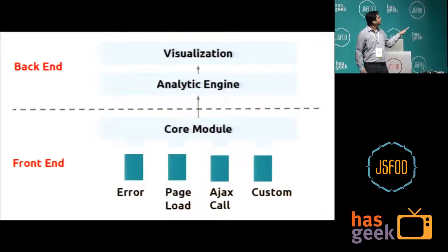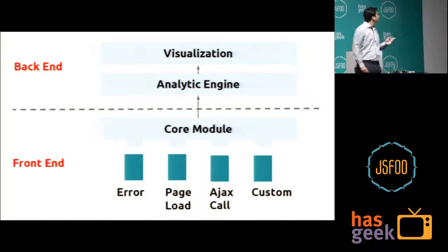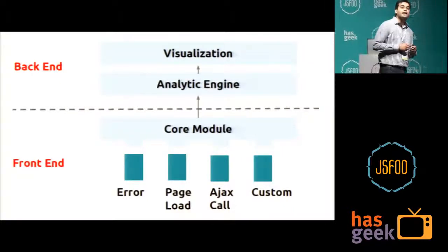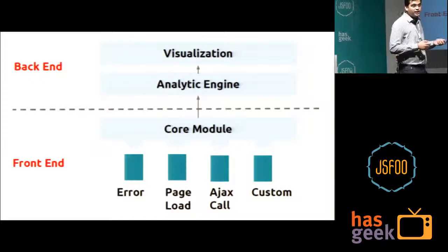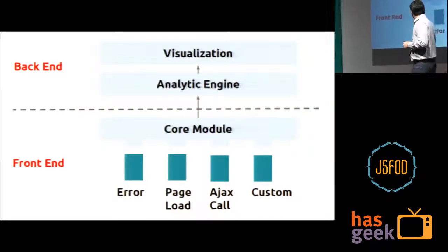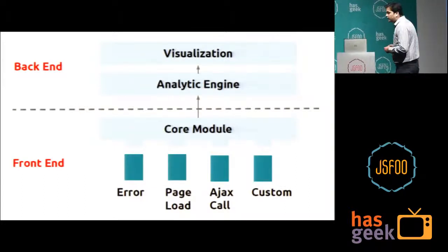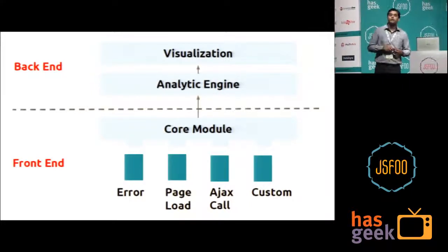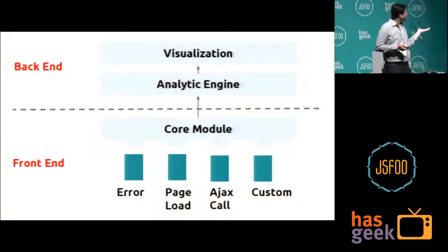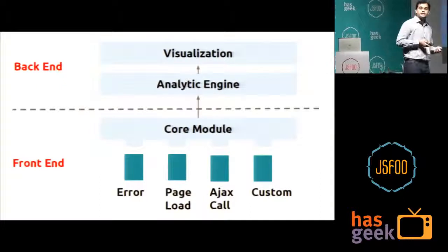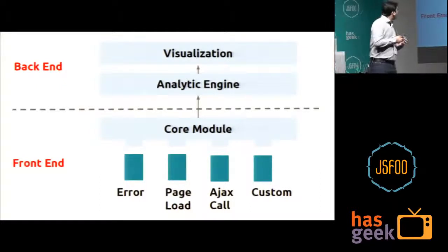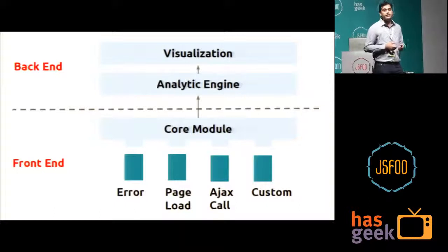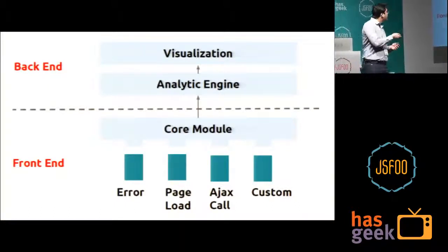It's a very simple block diagram, divided into two parts: a front end part and a back end part. The front end part collects the metrics and the back end part visualizes and analyzes them. On the front end side, I have all JavaScript with a plugin architecture containing a core module. The core module collects metrics provided by plugins and sends them to the server. We can track errors, page load performance, AJAX calls, and even custom metrics.